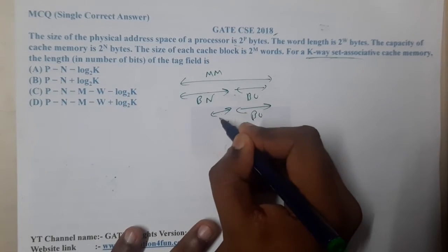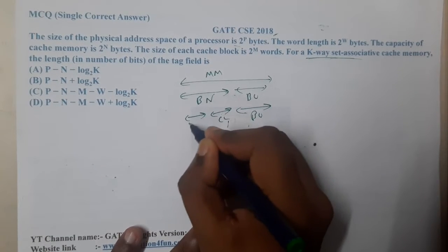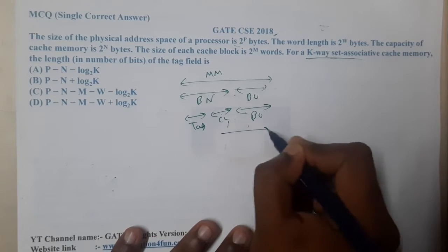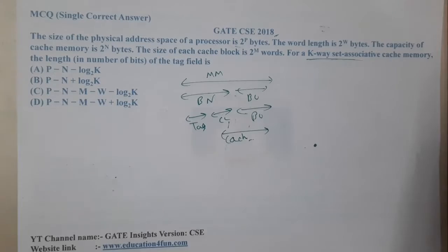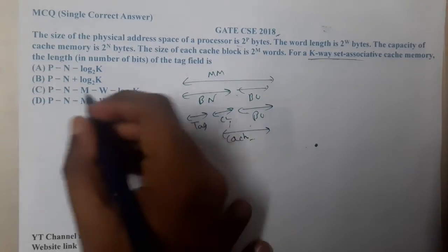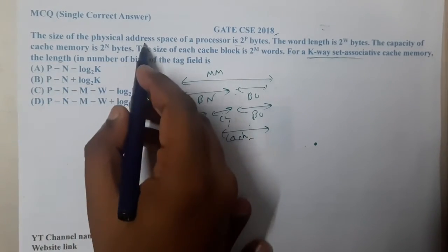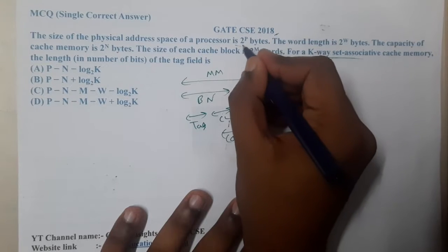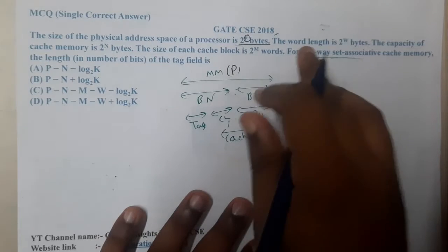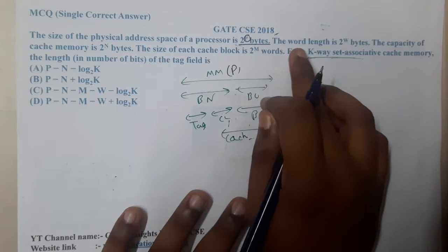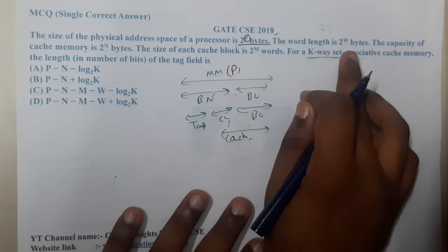Block offset, cache lines, tag, cache size. So let us start. The size of the physical address space of the processor is 2 power P bits. So this P indicates the size of our main memory.